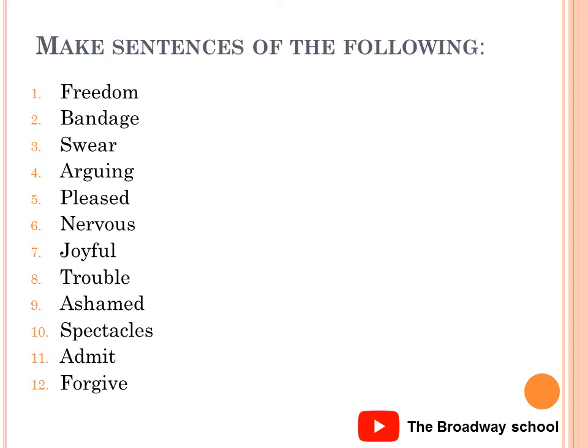Number five: pleased — which means happy. Number six: nervous — which means anxious or worried. Number seven: joyful — which means happy. Number eight: trouble — which means difficulty.